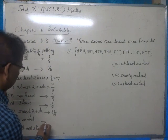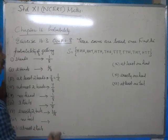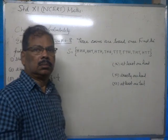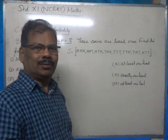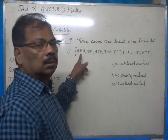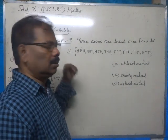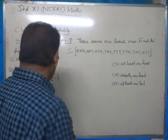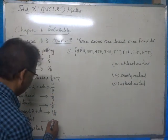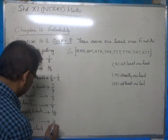Part eight: the probability of getting no tails, which means all heads. There is only one such element, so the answer is one by eight.